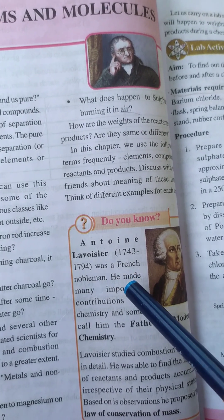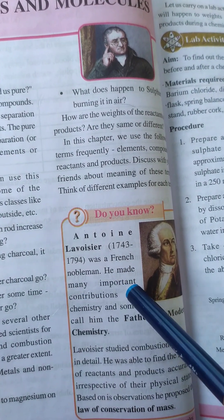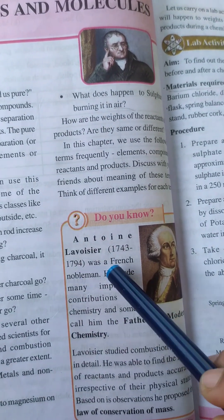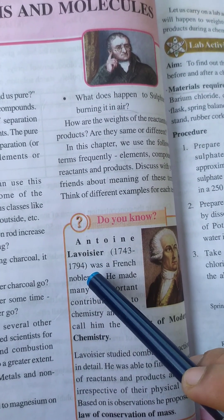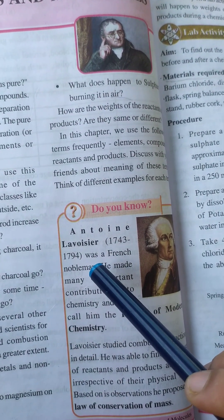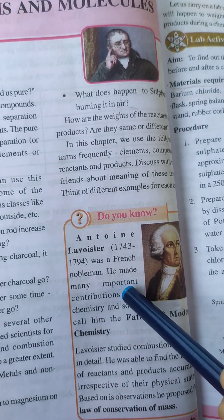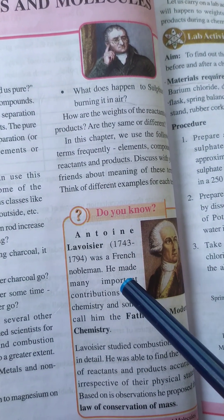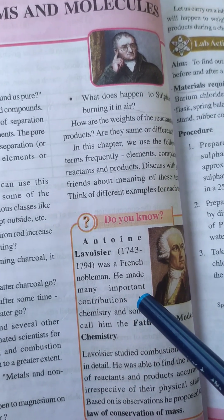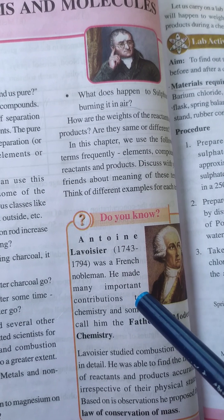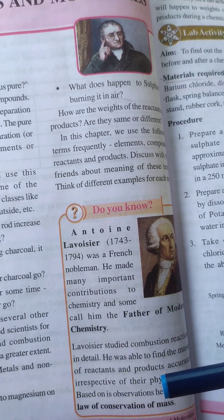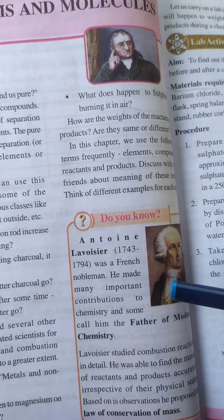Lavoisier made many important contributions to chemistry, and some called him the father of modern chemistry. He lived from 1743 to 1794 and was a French nobleman. He studied how reactants and products relate, even as physical state may change.